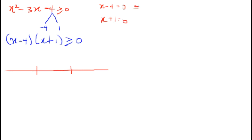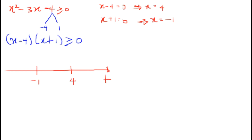If x minus 4 equals zero, then x equals 4, and x plus 1 equals zero gives x equals minus 1. So we plot minus 1 and 4 on the number line. This line tends to positive infinity on the right and negative infinity on the left.